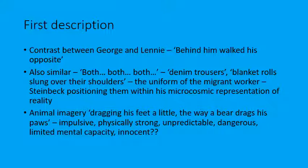The animal imagery could suggest Lennie is a very impulsive character, perhaps like an animal is quite impulsive. Or it might be about his sheer size and physical strength, or the idea of him being unpredictable and dangerous in the way an animal often is. Maybe it suggests limited mental capacity, or quite innocent — an animal can hurt you, but not out of any maliciousness. There's an innocence to Lennie's violence at times.